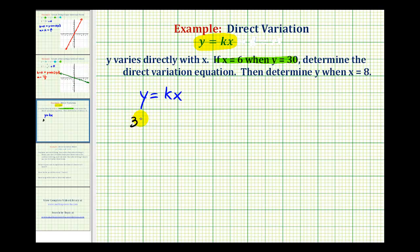We'd have 30 equals k times x, which is 6. Now we can solve for k. We divide both sides by 6.